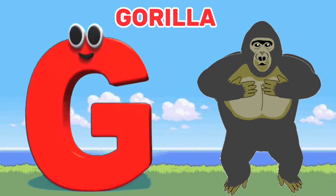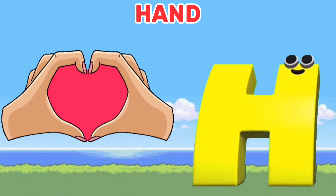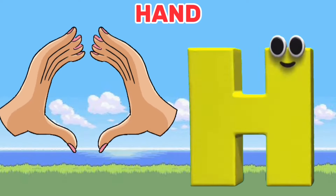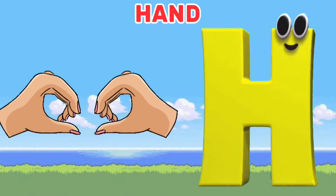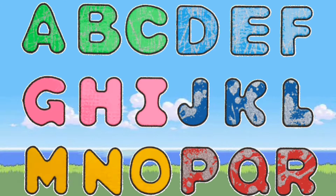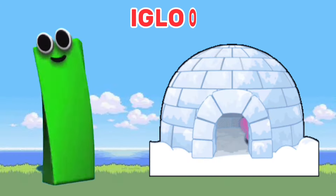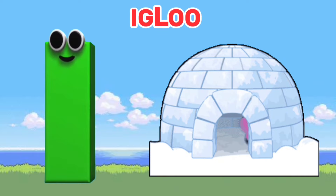G is for Gorilla. G, G, Gorilla. H is for Hand. H, H. It's the letters of the alphabet.